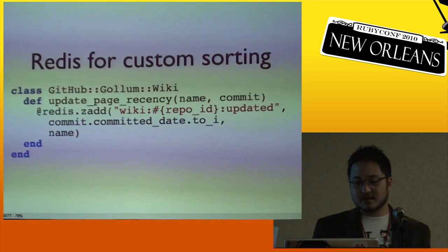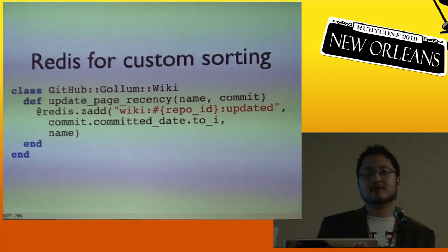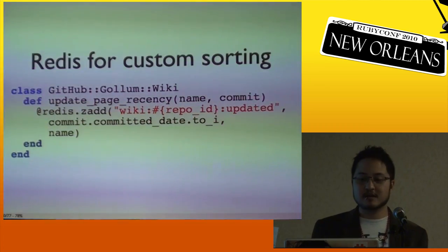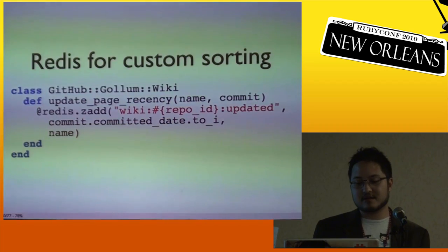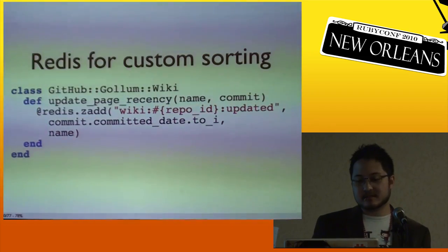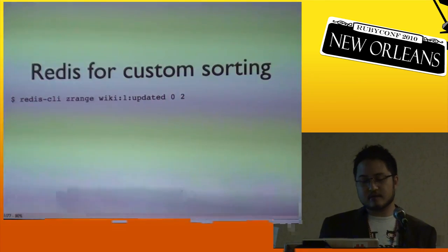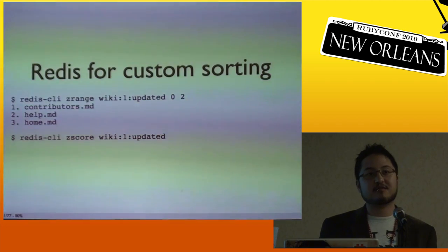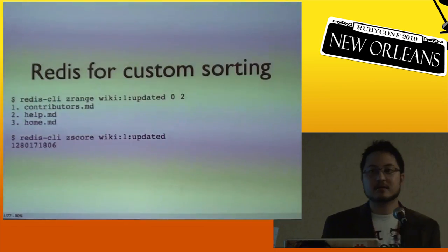This is an example of how I'm using Redis for the last-updated wiki feed that I talked about earlier. I didn't want to keep an internal counter of how many commits a wiki had, so we set up a post-receive hook every time you commit to it that updates a Redis sorted set, sorted by the committed date and keyed on the name of the page. Then I can use Redis to say, what are the last three updated pages for this wiki, and it'll just list them out. I can also figure out the last date a certain page was updated by getting the Z score.